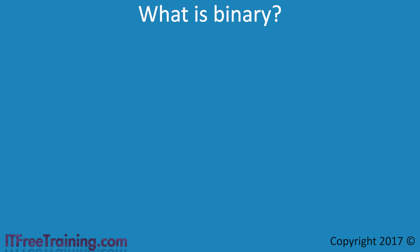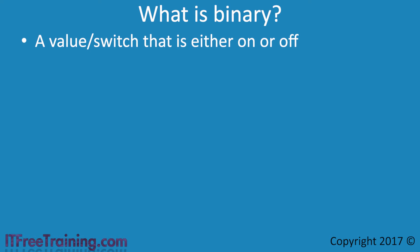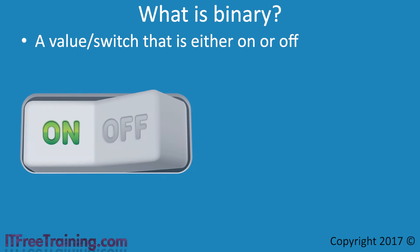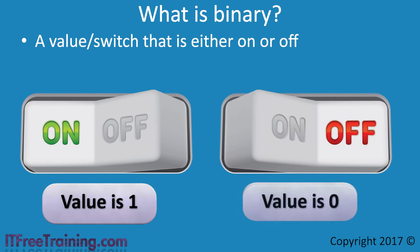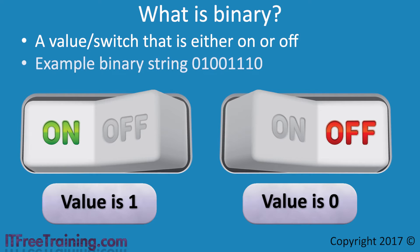First of all, what is binary? Binary is a system that uses values or switches that are either on or off. If the switch is on, the value is 1. If the switch is off, the value is 0. This gives you two possible values. However, if you group multiple binary values together, it is possible to represent larger numbers. A common way of doing this is to group the binary digits into a string.